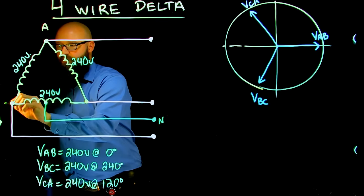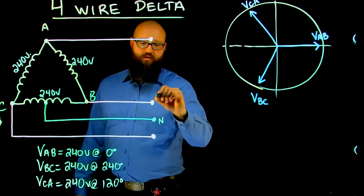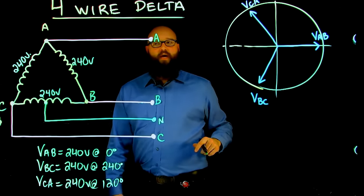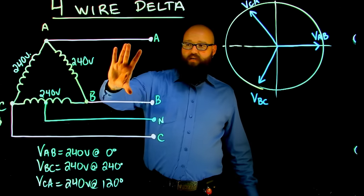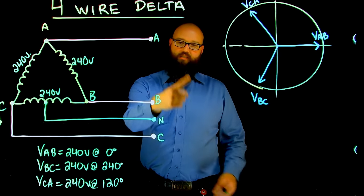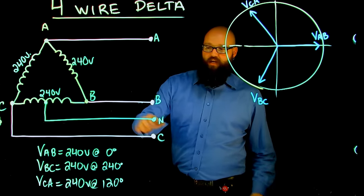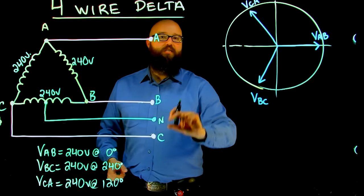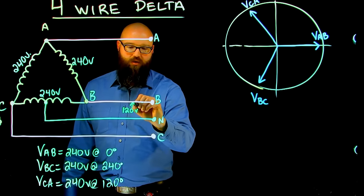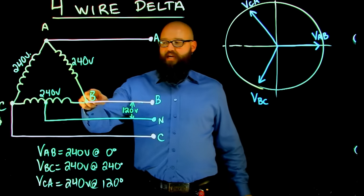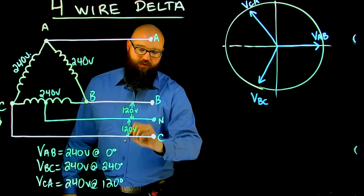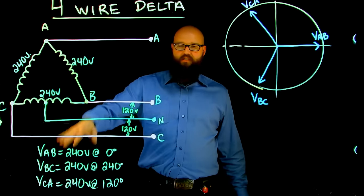I'm going to change this to C, which makes this B. Here's my B, C, and way up here we've got our A as well. So A to B, 240 volts, B to C, 240 volts, and C to A, 240 volts. But like I said, now we have this second voltage that we can access. We have this 120 volts between B and N, and I have 120 volts between C and N because we've center tapped that B to C winding.